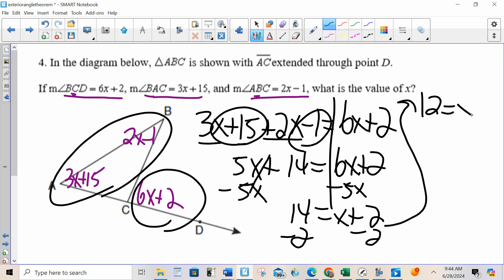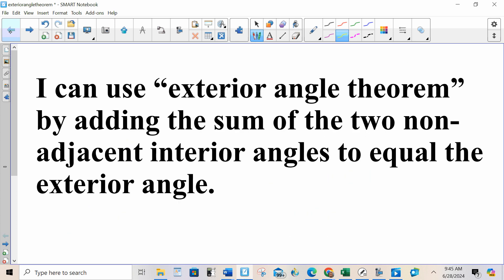It's asking for X, so I'm done. If it asks for one of the angles, I would substitute in. The exterior angle is equal to the sum of the two interior angles. That is the exterior angle theorem, and that is what to do when you see an exterior angle. Practice. Have a nice day. Thank you.